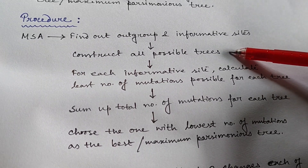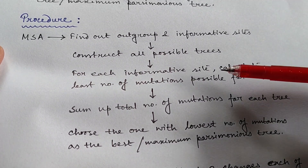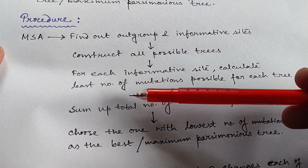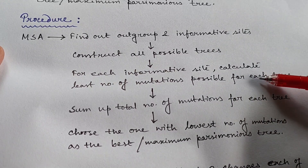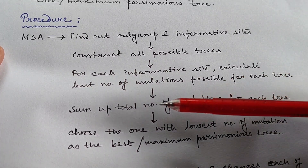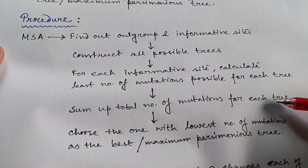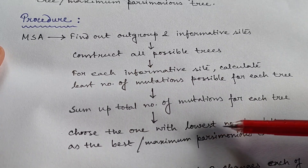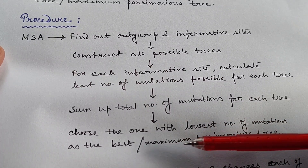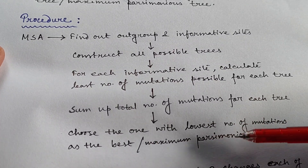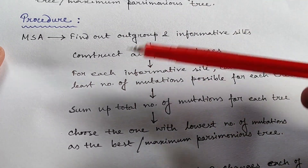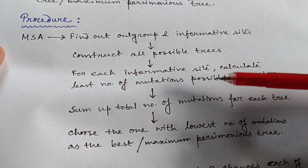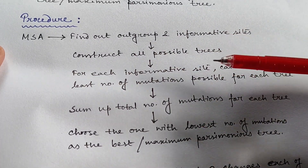After finding the outgroup and informative sites, you construct all the possible trees. Then for each informative site, calculate the lowest number of mutations possible for each tree. After that, sum up the total number of mutations for each tree, and choose the tree which has the lowest number of mutations. That will be your simplest tree, best tree, or maximum parsimonious tree.